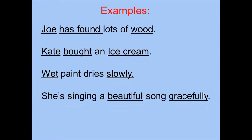Examples. Joe has found lots of wood. The subject here is Joe. The verb here is has found. And the object is wood. Another example: Kate bought an ice cream. The subject here is Kate. The verb here is bought. And the ice cream is the object.